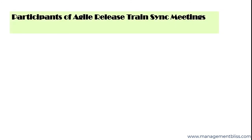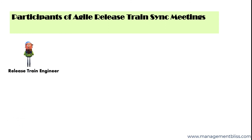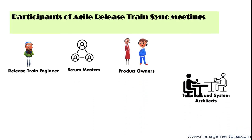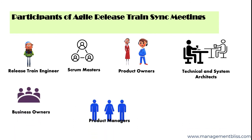Who are the participants of ART Sync meetings? Release Train Sync meetings involve many teams, starting from 5 to 12. Therefore, these meetings involve a good amount of people, particularly the Release Train Engineer, Scrum Masters, Product Owners, Technical and System Architects, Business Owners, and Product Managers.